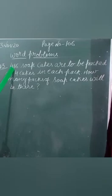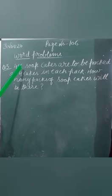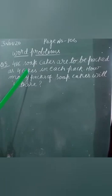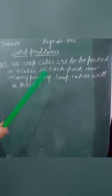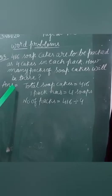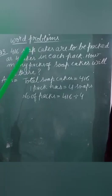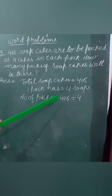Question 3: 416 soap cakes are to be packed as 4 cakes in each pack. How many packs of soap cakes will there be? The statement is, total soap cakes are 416. One pack has 4 soaps. Number of packs: 416 divided by 4.